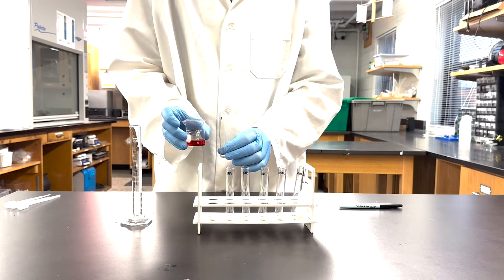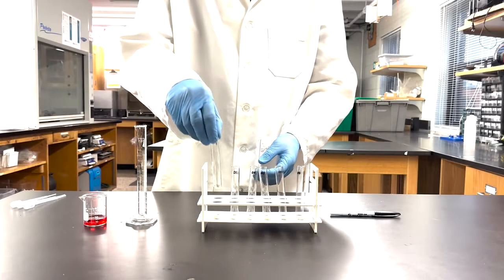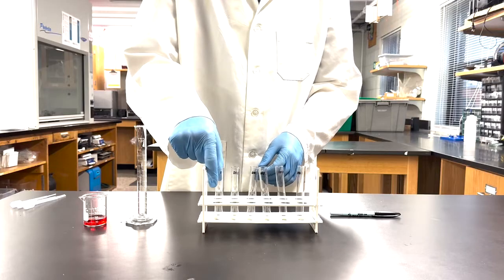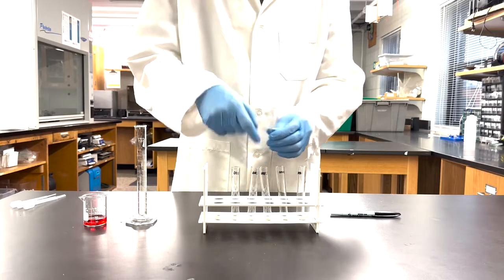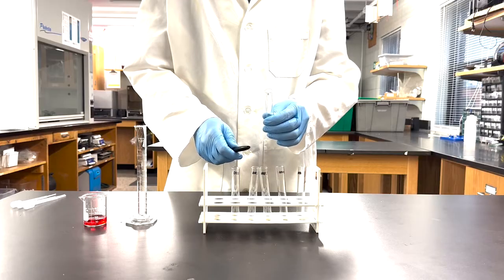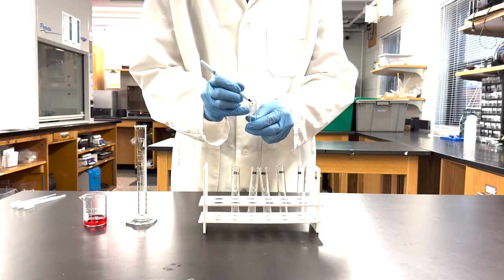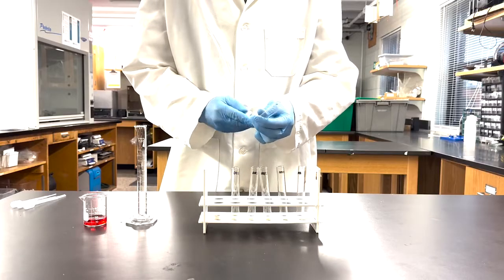To perform a serial dilution, begin with a stock solution to be diluted. Determine the desired dilution factor. 1 to 10 is a common dilution factor that creates a logarithmic dilution, but other factors can also be used, such as a 1 to 2 dilution where each solution is half as concentrated as the previous solution.